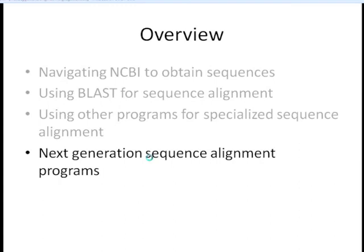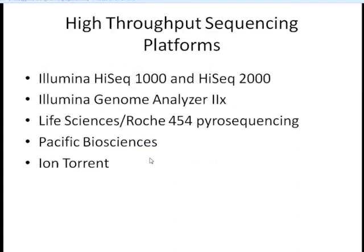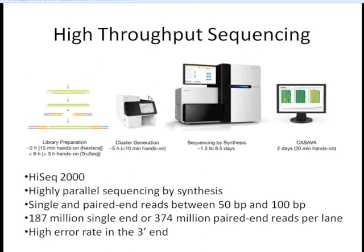The last thing we're going to talk about today is next-generation sequence alignment programs. There are a lot of different technologies to generate high-throughput sequence: the Illumina Genome Analyzer 2, the Illumina HiSeq 1000 and HiSeq 2000, which generate short reads; Roche 454, which gives longer reads; Pacific Biosciences, which sequences single molecules; and Ion Torrent, which unlike the others that use fluorescence, measures based on chemistry — specifically measuring the pH after hydrogen atoms are released.